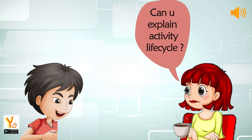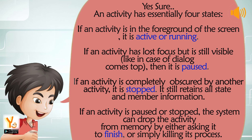The interviewer asked: Can you explain the activity life cycle? Raj replied: An activity has essentially four states. If an activity is in the foreground of the screen, it is active or running. If an activity has lost focus but is still visible — like when a dialog appears on top — it is paused. If an activity is completely obscured by another activity, it is stopped, and it still retains all state and member information. If an activity is paused or stopped, the system can drop it from memory by either asking it to finish or simply killing its process.